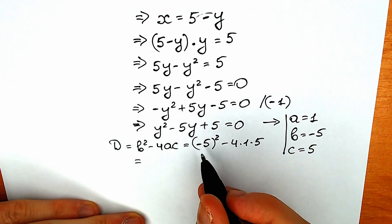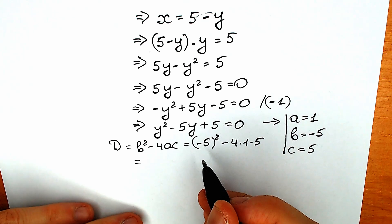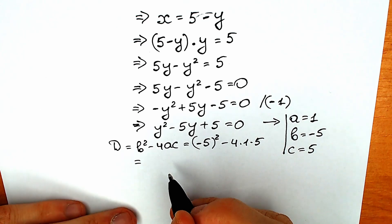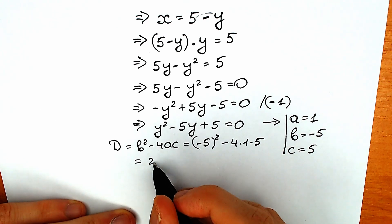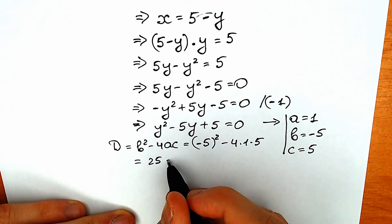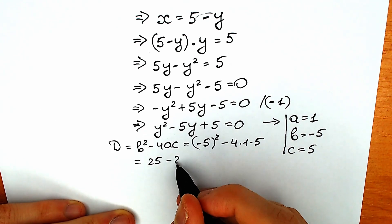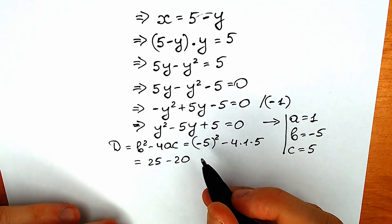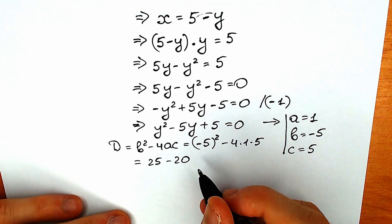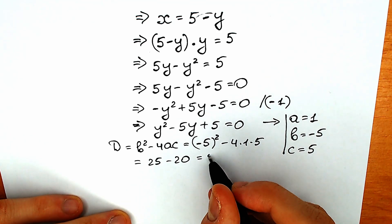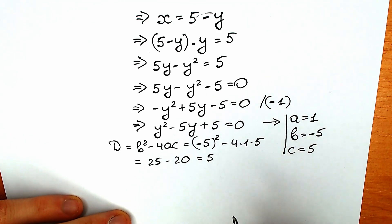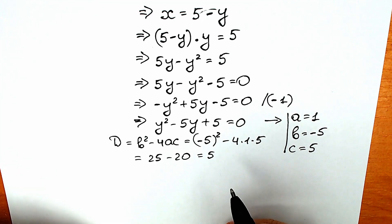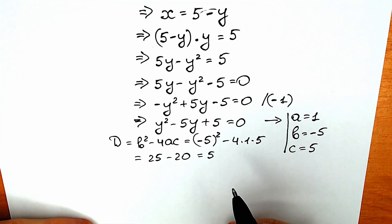Let's simplify. Minus 5 squared equals 25, and 4 times 1 times 5 equals 20. So the discriminant equals 25 minus 20, which is 5. It's really great because we have a positive discriminant, which means we will have two real number roots.